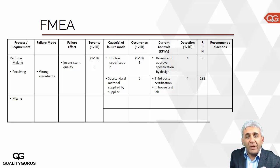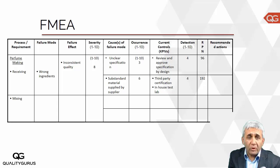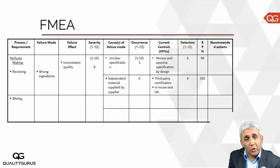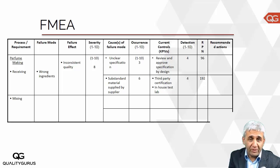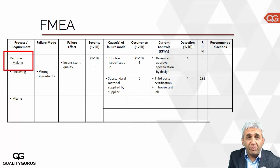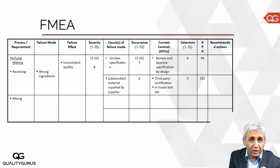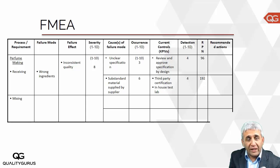Here is a very basic FMEA — Failure Mode and Effect Analysis — chart. Earlier we talked about three types of FMEAs: concept, design, and process. This particular FMEA is a Process FMEA because here we are talking about the process of making or the manufacturing of perfume bottles.